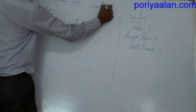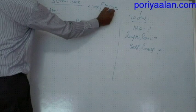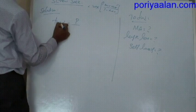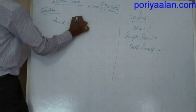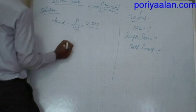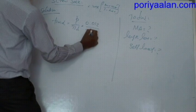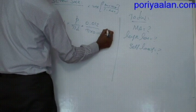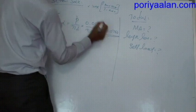We calculate tan α using the formula: tan α = pitch divided by (π × mean diameter) = 0.012 divided by (π × 0.05), which gives tan α = 0.0764.